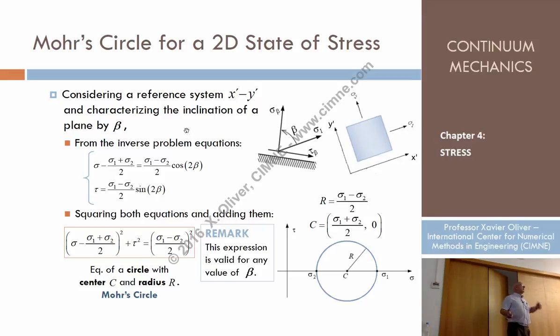I know sigma x, sigma y, tau xy, or sigma 1, sigma 2, and from each I can pass from one to the other by the formulas you have seen before, whatever.